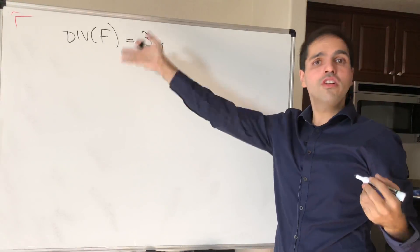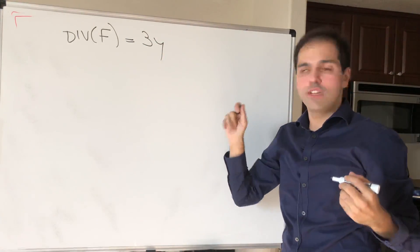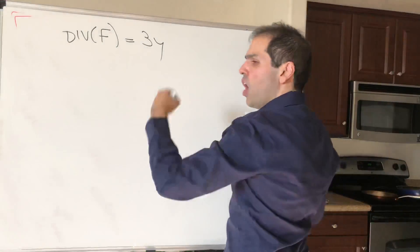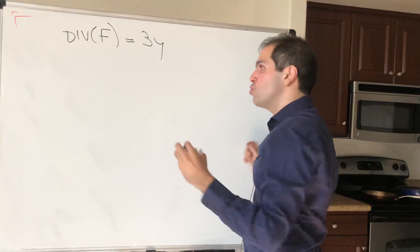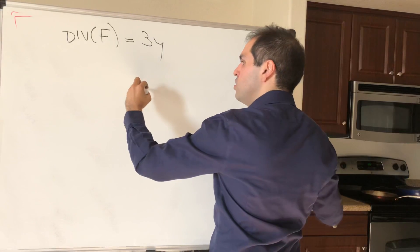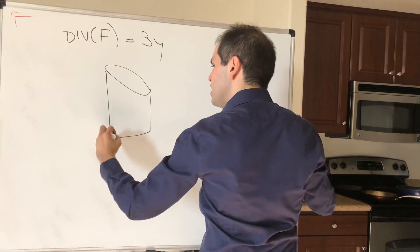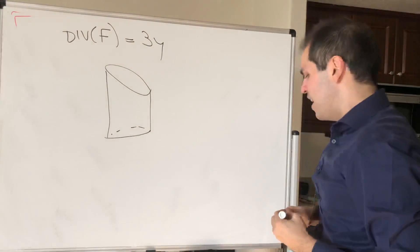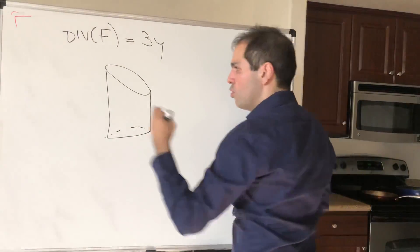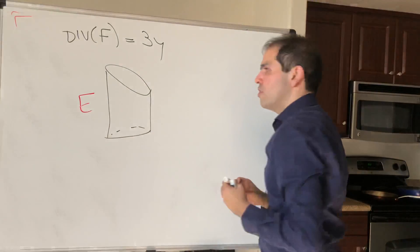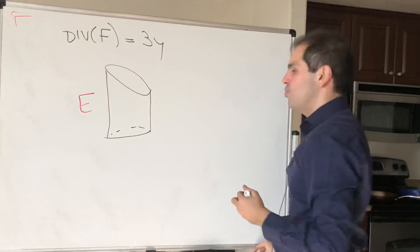So what we found so far, the divergence of F is just 3y, and now we just need to figure out what this region E is, because we need to triple integrate over this. So remember, E was this tilted can, and in order to triple integrate over this, we just need to figure out x, y, and z.